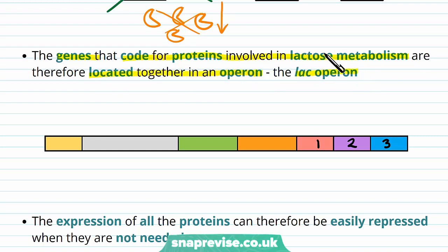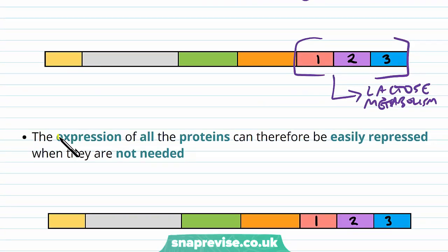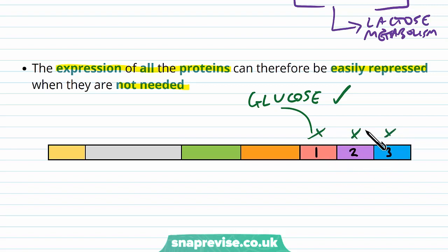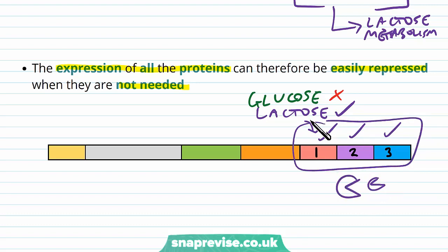We call this operon the lac operon — hence lac for lactose. These genes only come on when lactose is available, and there's no point in having them spread across the genome. So all three genes for lactose metabolism are kept together and either turned on or off based on whether lactose is present. The expression of all proteins in that operon can therefore be easily repressed when not needed. If glucose is present, none of these get transcribed. However, if glucose becomes absent but lactose is available, all of them get transcribed and we make the enzymes used to metabolize lactose.